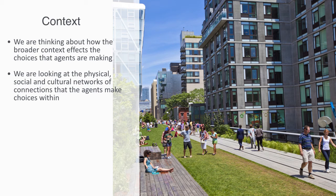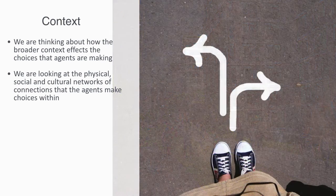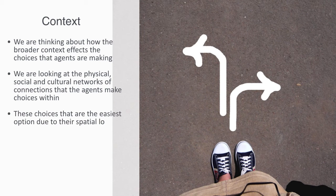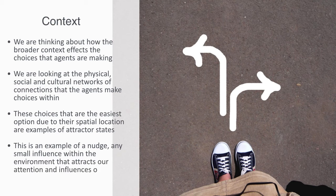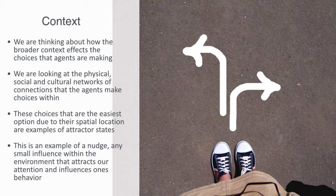Or in a canteen restaurant, there is a choice of where we place items — we might put the healthy food at the entrance, making it more accessible than other options. These choices that are easiest due to their spatial location are examples of what are called attract states. Being the easiest options, they are a default that attracts users to adopt that choice. This is an example of what is called a nudge — a small influence within the environment that attracts our attention and influences behavior. Marketing has been using nudge theory for a long time in the layout of shops and placement of products, but because marketing is largely about creating a context for influencing people's choices, it never really fitted in with standard economic theory.